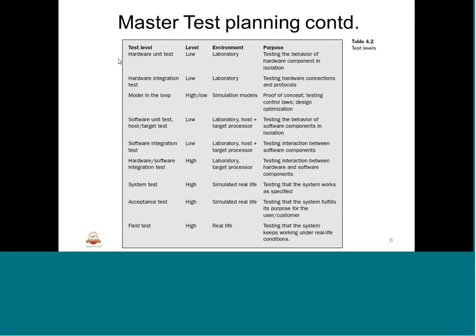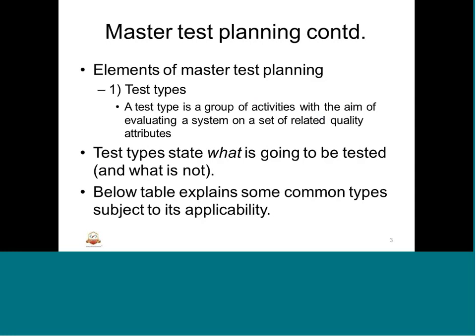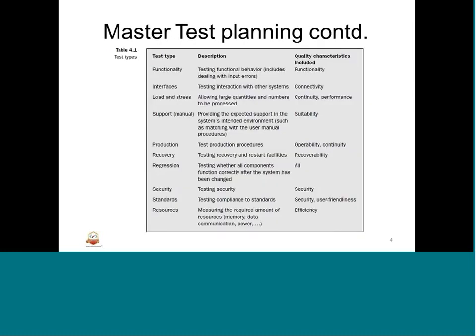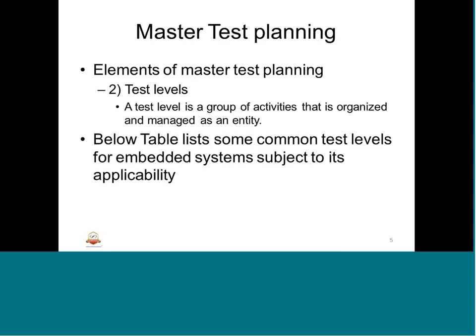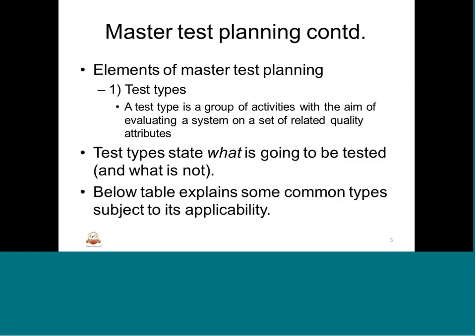So this is the test level under master test planning. We have two types: test types, which deal with what is going to be tested and what is not — summarizing the group of activities to evaluate using quality attributes; and test levels, which define how those attributes are going to be tested — at what level such as model in the loop, software integration, hardware-software integration, or system test. All these will be considered for master test planning.